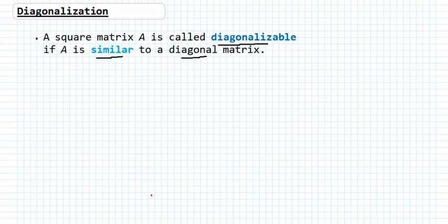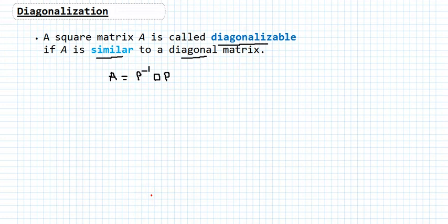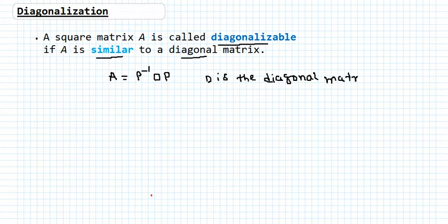In another way to say that: if we have a matrix A, then the matrix is diagonalizable if we can find an invertible matrix — which means the matrix has an inverse — such that A equals P inverse D P, where P is an invertible matrix and D is the diagonal matrix to which A is similar. Then we will say that A is similar to a diagonal matrix, so the matrix A is diagonalizable.